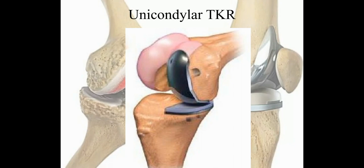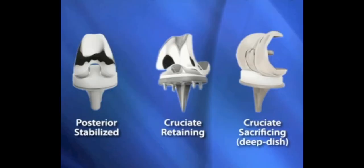In unicondylar TKR, only one condyle of the femur is replaced — if degeneration has occurred only in one condyle, only that compartment is replaced with the artificial component. On the basis of compartment, TKR can be unicompartmental (only medial or lateral joint surfaces replaced), bicompartmental (entire femoral and tibial surfaces replaced), or tricompartmental (femoral, tibial, and patellar surfaces replaced). Different implant designs include posterior stabilized, cruciate retaining, and cruciate sacrificing designs.